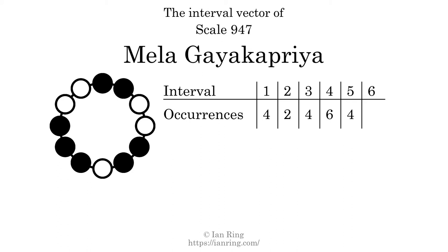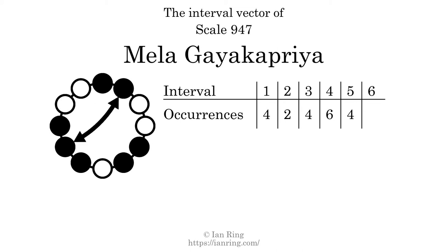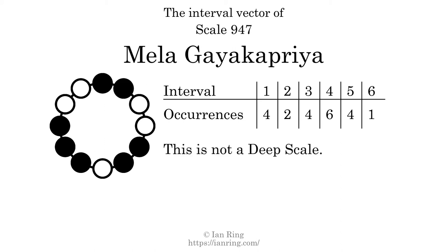There are four intervals with the size of five semitones, here, here, here, and here. There is one interval with the size of six semitones, here. Each interval does not appear in this scale a unique number of times, so this is not a deep scale.